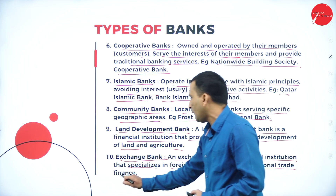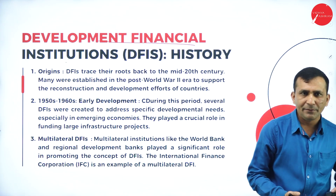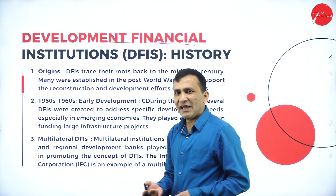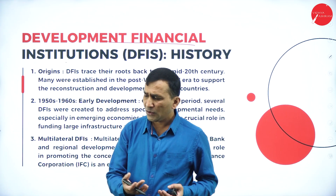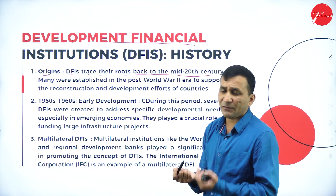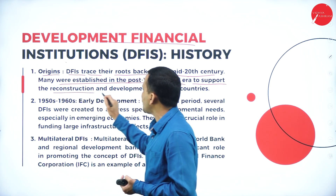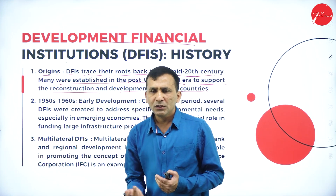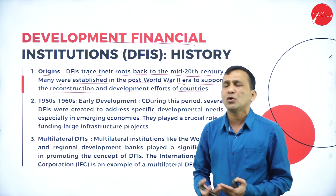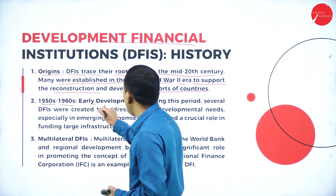The next concept is Development Financial Institutions (DFIs). Development includes agriculture development, industrial development, and small-scale industry development — very important for any nation. We need to support farmers who provide agricultural products. The origin of DFIs traces back to the mid-20th century. Many were established in the post-World War II era to support reconstruction and development efforts. After the war, there were huge losses in land and agriculture, and financing was essential for recovery.